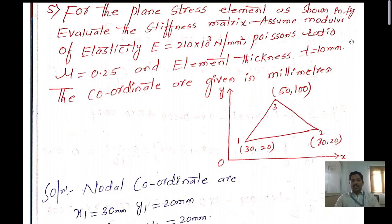In this problem we need to find out, for the plane stress element as shown in the figure, the stiffness matrix. The modulus of elasticity is given as E equal to 210 into 10 to the power 3 Newton per mm square, and Poisson's ratio is given as 0.25, and the element thickness T is given as 10 mm.